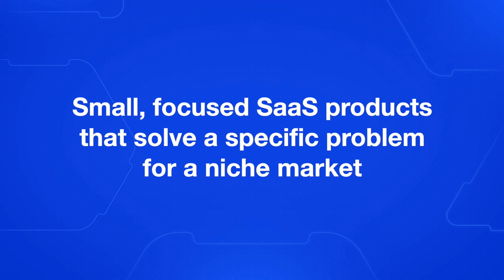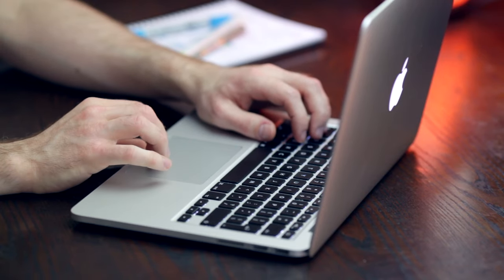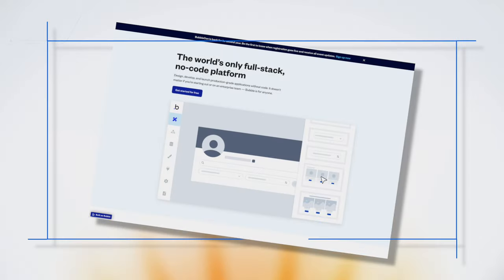Let's quickly define what we mean by micro SaaS. These are small, focused software as a service products that solve a specific problem for a niche market. They're typically run by one person or a small team with low overhead and a high potential for profitability. Combining micro SaaS with no-code tools like Bubble gives anyone the ability to build, launch, and scale your ideas faster without writing a single line of code.